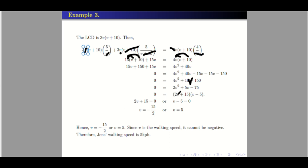By factoring, this equals (2V plus 15)(V minus 5) equals 0. So either 2V plus 15 equals 0, giving V equals negative 15 over 2, or V minus 5 equals 0, giving V equals 5. Since speed is a scalar quantity with no direction, it must be positive. Therefore, negative 15 over 2 is not accepted as a solution. We only accept V equals 5. Therefore, Jens's walking speed is 5 kilometers per hour.